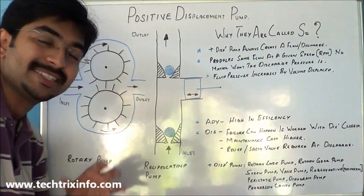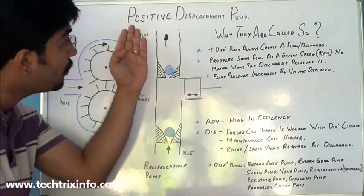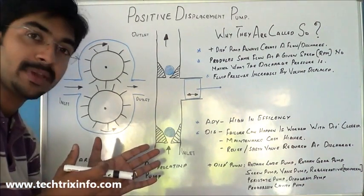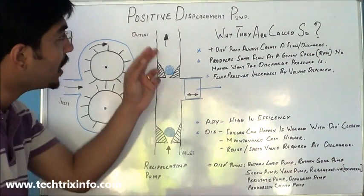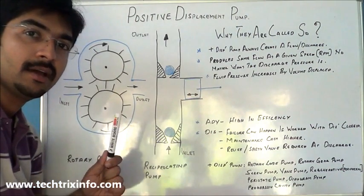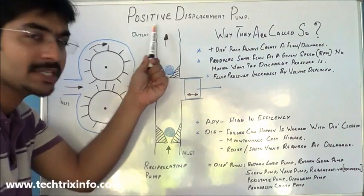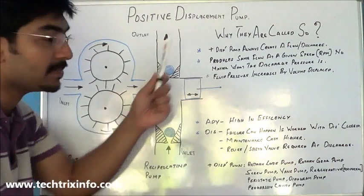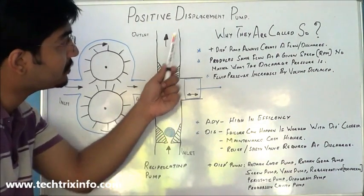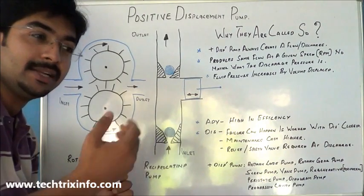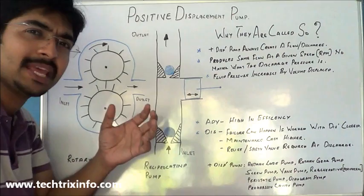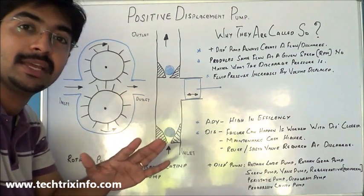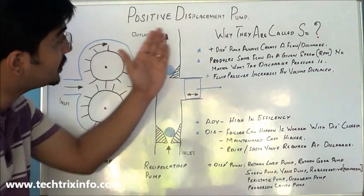A positive displacement pump is explained in this topic. The term 'positive displacement' means: 'positive' indicates there is always something to deliver, and 'displacement' refers to what is being given or moved. So a positive displacement pump is a pump which always creates a discharge or a flow while it works — it can create a flow or discharge whenever it simply functions.